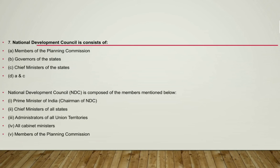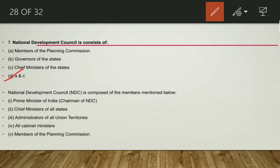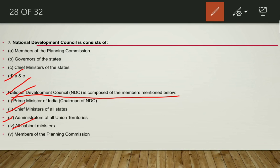The question on National Development Council: what does it consist of? The answer is all of the above — members of the Planning Commission and Chief Ministers of states. The National Development Council, formed on 6th August 1952, consists of the Prime Minister, Chief Ministers of all states, administrators of all Union Territories, all Cabinet Ministers, and members of the Planning Commission. Governors of states are not included.